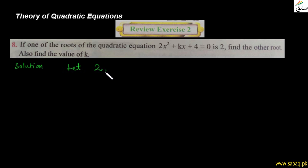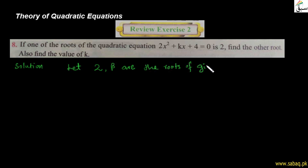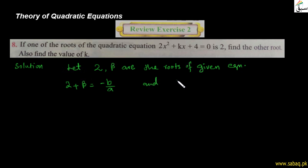ہم کہتے ہیں کہ 2 and beta are the roots of the given equation۔ تو ان کا sum اور product: sum of the roots یعنی 2 + β = −b/a، اور product of the roots یعنی 2 × β = c/a۔